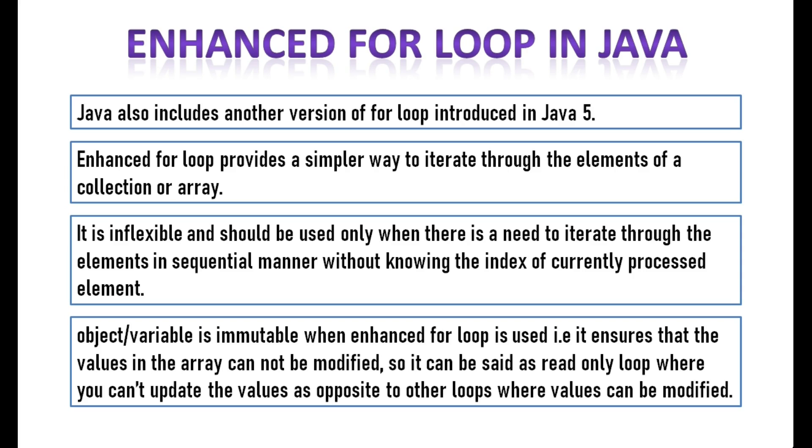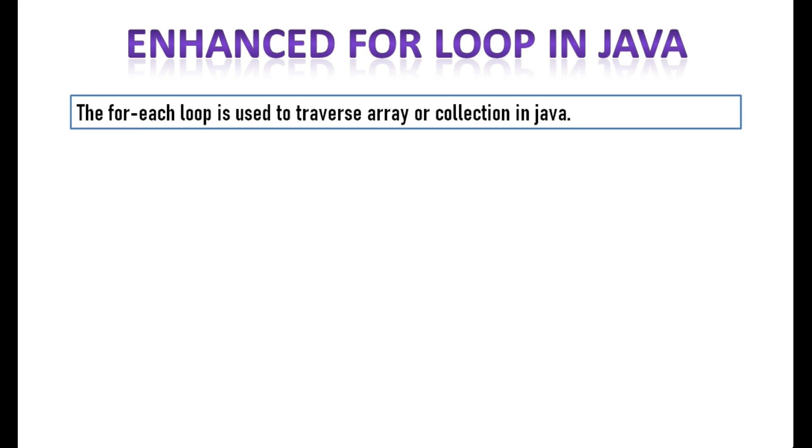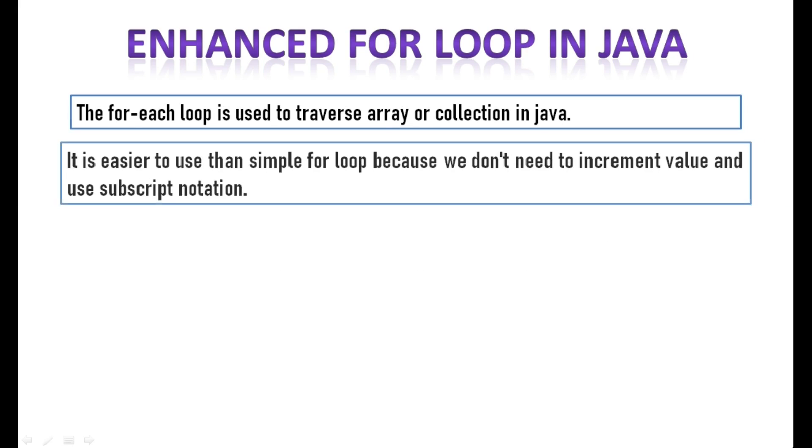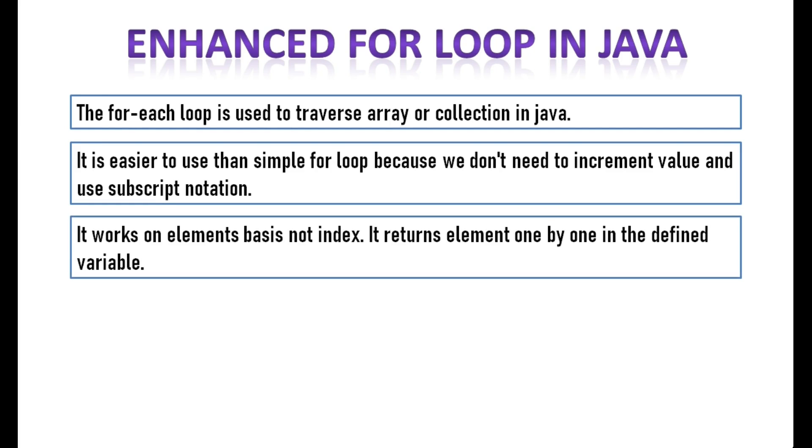It can be set as read only loop where you can't update the values as opposite to other loops where values can be modified. The for each loop is used to traverse array or collection in Java. It is easier to use than simple for loop because we don't need to increment value and use subscript notation. It works on elements basis not index. It returns element one by one in the defined variable. We recommend using this form of the for statement instead of the general form whenever possible.